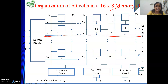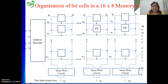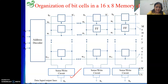Whenever the decoder makes a line active, all the cells connected in that row will be enabled — meaning the flip-flops are enabled. If I want to perform a read operation, values will go from the cells to the sense-write circuit. In every column, we have one sense-write circuit.